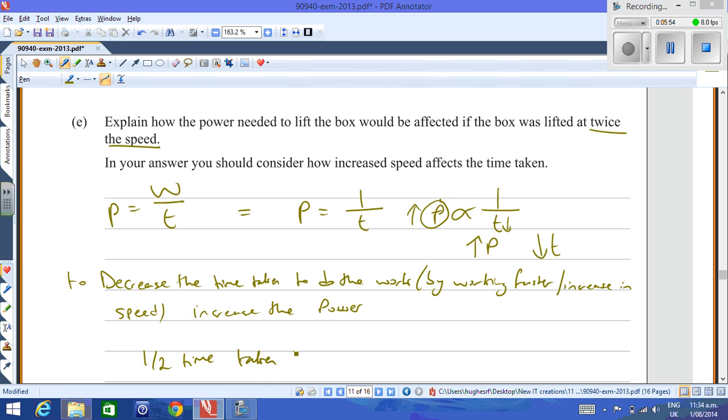If you halve the time taken by doubling the speed, then the power must be doubled. So in simple terms, if you want to discuss how the time is affected by the increased speed, if you increase the speed it means you're using more power from the forklift in this case, and therefore there should be less time taken. So if you halve the time, you need to double the power. And that is a look at question four from the 2013 paper.